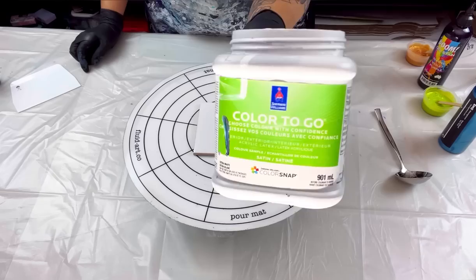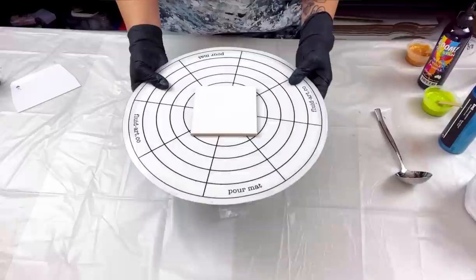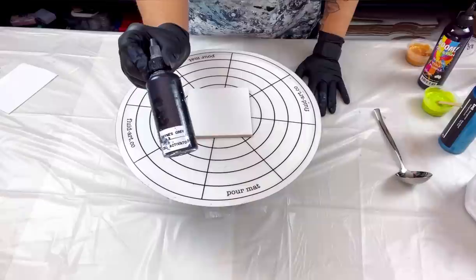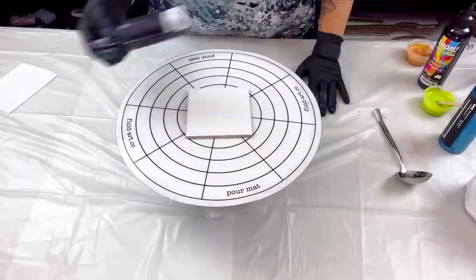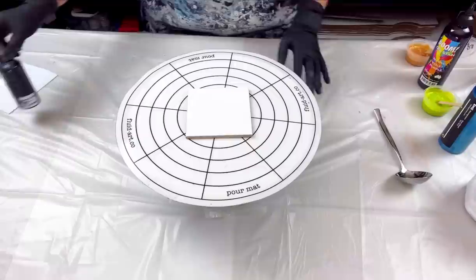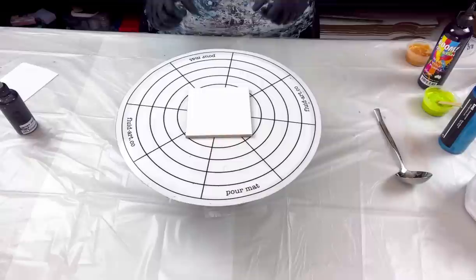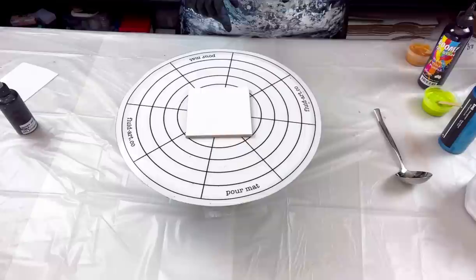All right, so today I'm going to be using my Color To Go by Sherwin-Williams, and it is just white. So that is going to be my base slash pillow paint, call it whatever you want. My cell activator is going to be Payne's Gray by Amsterdam, and that is mixed with just Payne's Gray by Amsterdam and Australian Floetrol, not to be confused with regular Floetrol. You can buy all this stuff from the Fluid Artco website. That link is in the description below.